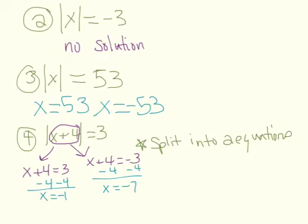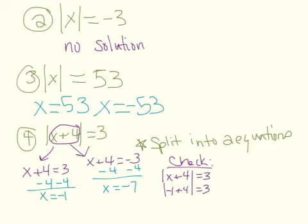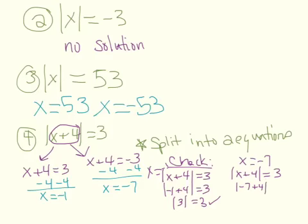It's a good idea on this problem and all others to check your answers. Our original equation was the absolute value of x plus four equals three. Let's try negative one: negative one plus four is three, and the absolute value of three is three — good. For x equals negative seven: substituting in gives the absolute value of negative three equals three, which is true. Both answers are correct, which was what we were aiming for.